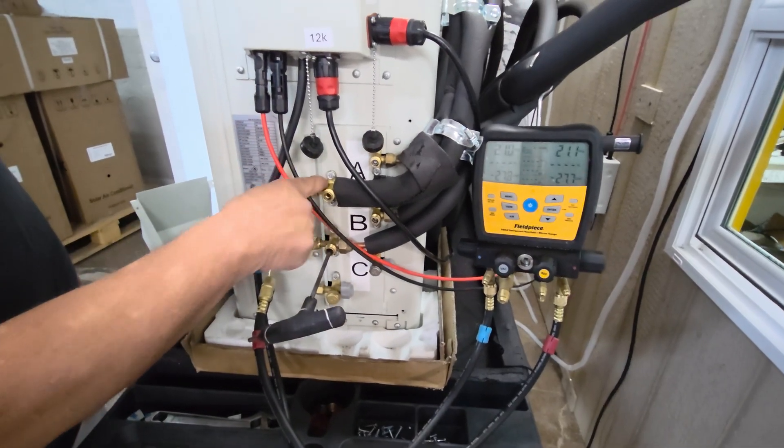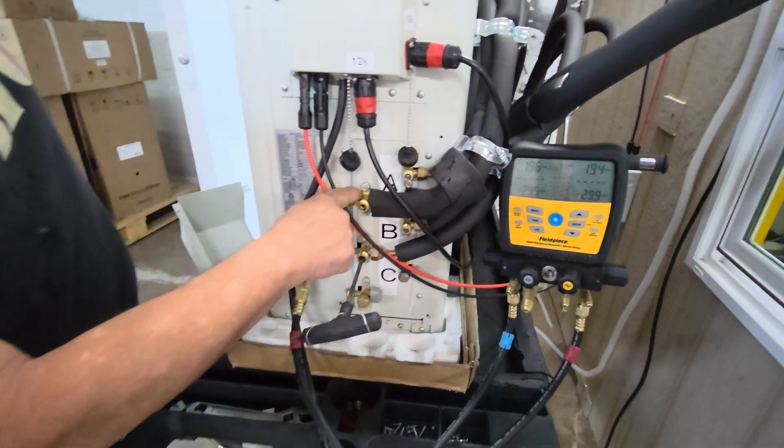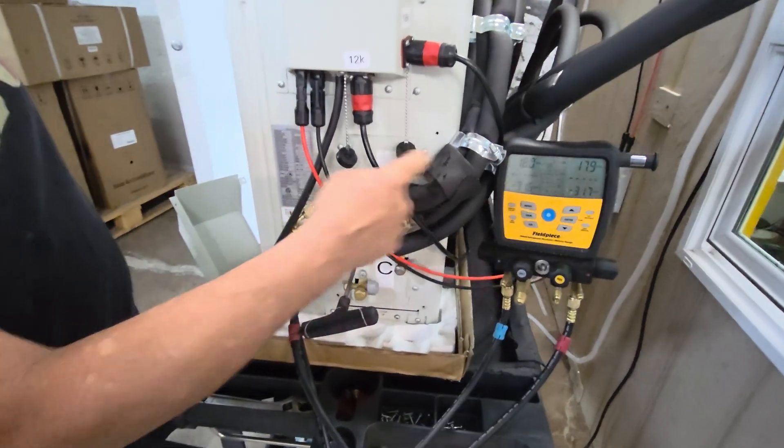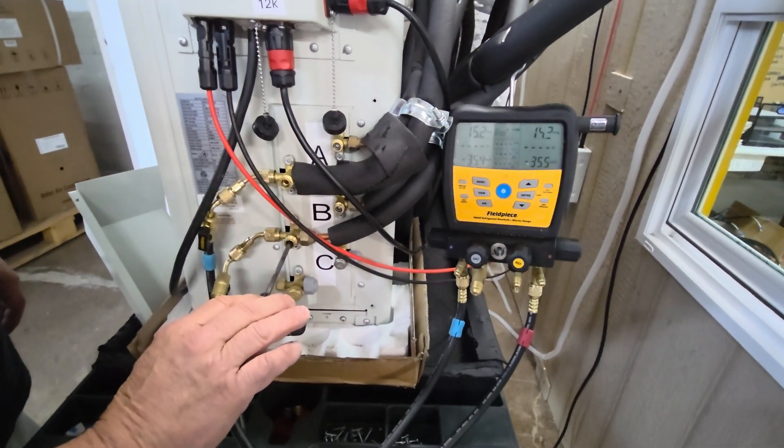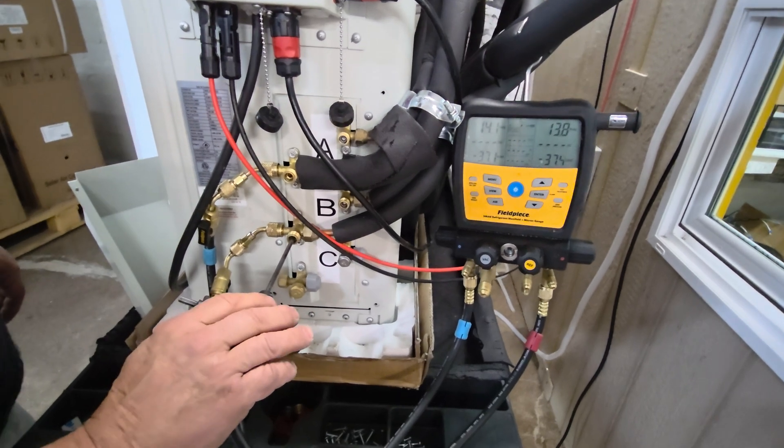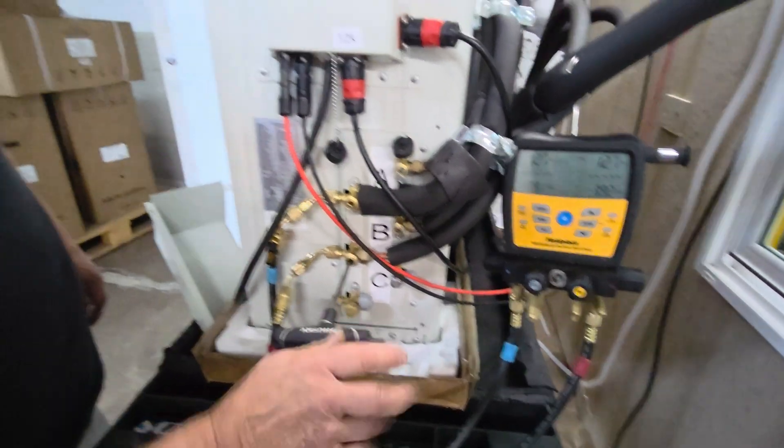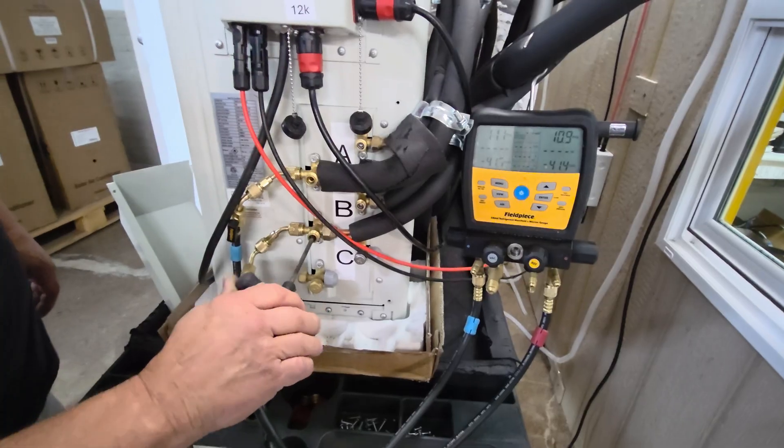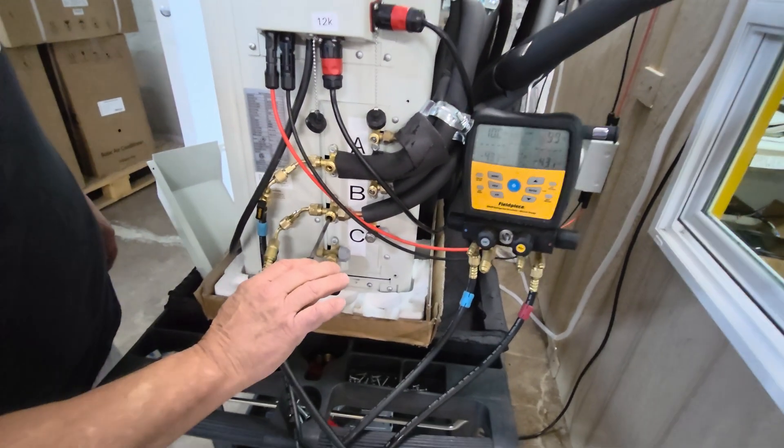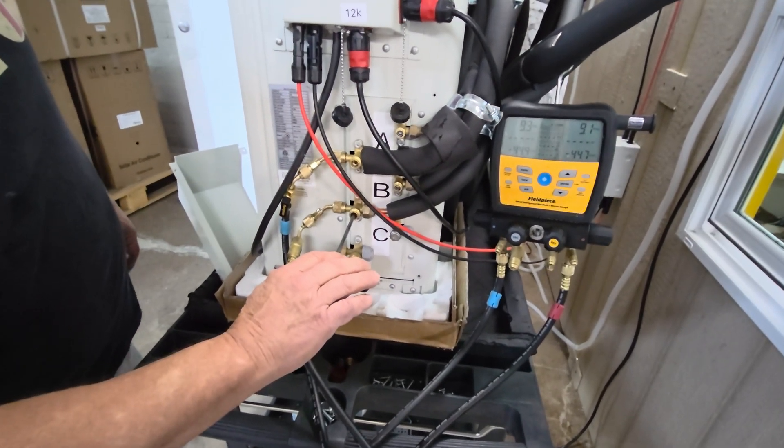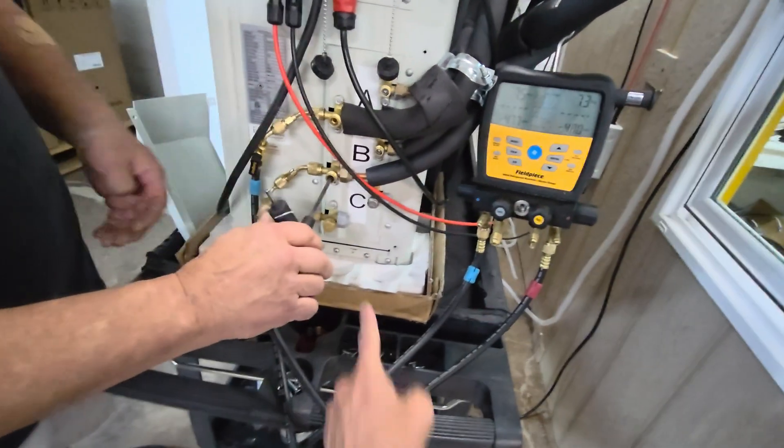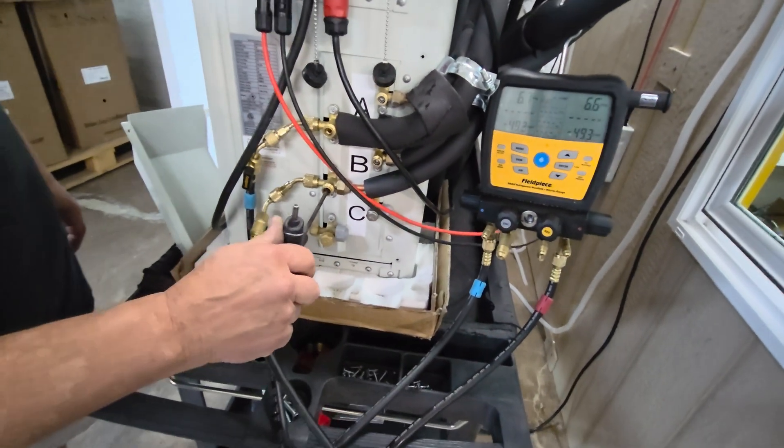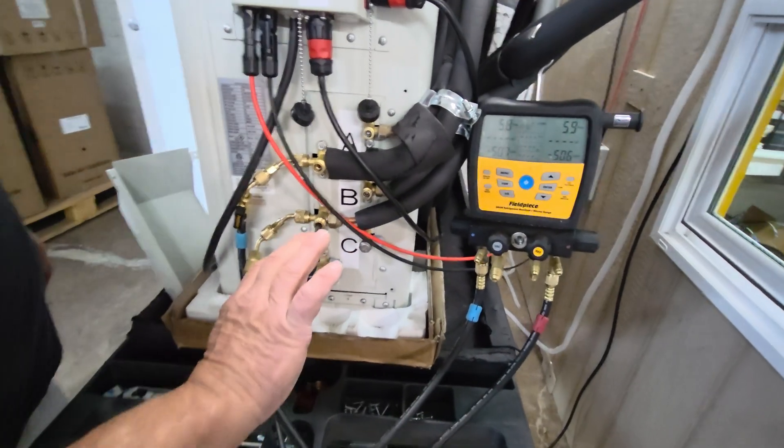In other words, you really only need a hose or gauges hooked up on this one port right here because they're pretty much the same. So if you don't have one of these fancy Fieldpiece gauges, your normal gauges will work on one line because they're pretty much the same. And this would work for three, five, whatever number of zones, as long as they're all in cooling.